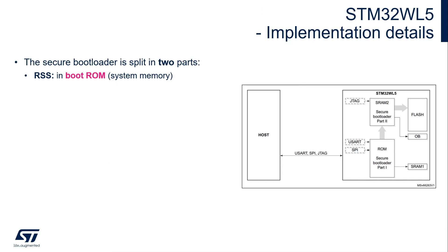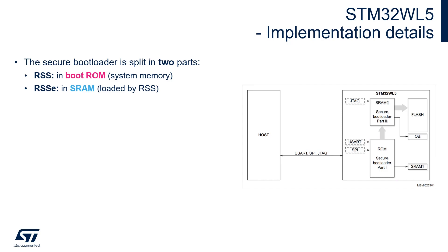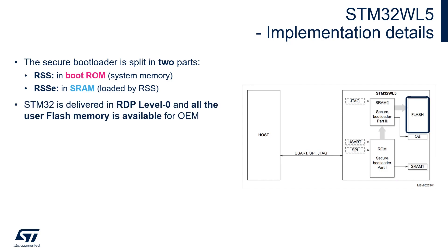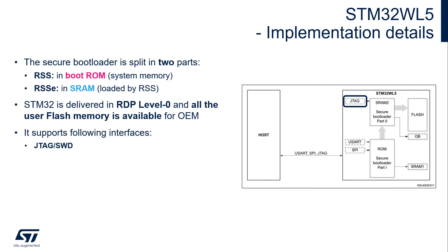In STM32WL, the structure is similar to the L5, with the bootloader split into a fixed part in the ROM and one loaded into SRAM by the host. This also leaves the whole flash for the OEM code and allows delivery of the device in RDP level 0. The SFI process supports JTAG, SWD, and additionally through the system bootloader, USART and SPI.